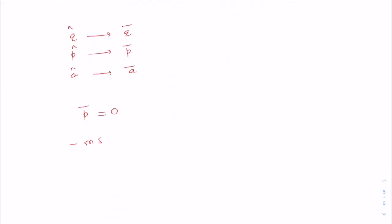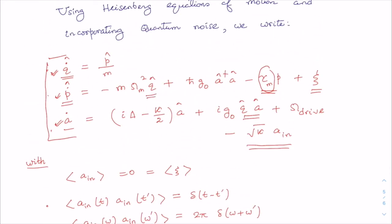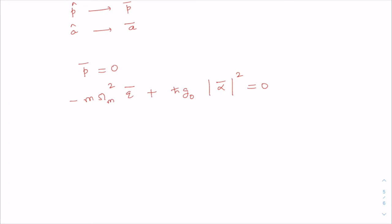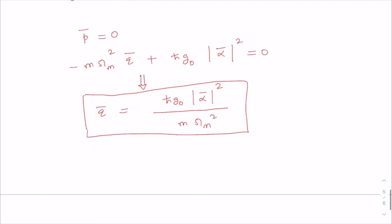From the equation of motion for the momentum operator in steady state, we get: -mω_m² q̄ + ħz₀|ᾱ|² = 0. Since in steady state a†a becomes |ᾱ|² and p averages to zero, we can write q̄ = ħz₀|ᾱ|² / (mω_m²).